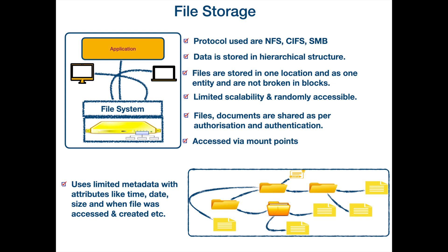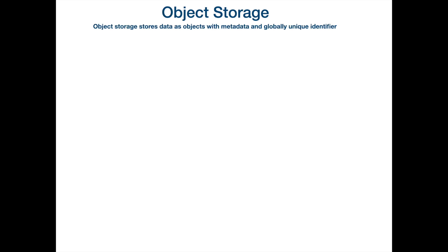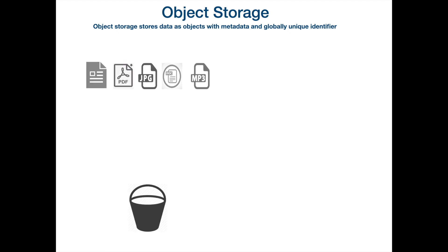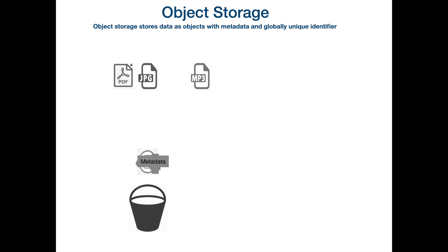Here we had only limited metadata, but if we move on to object storage, we'll have comprehensive metadata. Object storage stores data as objects with metadata and a globally unique identifier. In block storage we created blocks to save data; in file storage we saved the file as a whole. In object storage, the entire object first gets stored, and with that object, globally unique identifiers are attached. Along with the global unique identifier, metadata also gets attached. Here I have a few files that need to be saved as object storage — it will attach metadata and a unique ID to each of them.